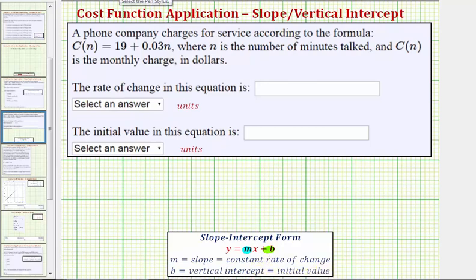In our case, because we have C as a function of N, the slope M is going to be equal to the coefficient of N, which in this case is equal to 0.03, and B, the vertical intercept, is equal to the constant term, 19. So by analyzing the form of the equation, we know M equals 0.03 and we know B equals 19.